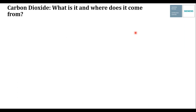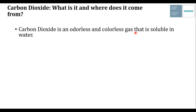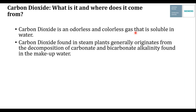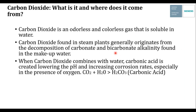Let's talk about carbon dioxide — what is it and where does it come from? Carbon dioxide is an odorless, colorless gas that is soluble in water. CO₂ found in steam plants generally originates from the decomposition of carbonate and bicarbonate alkalinity in the makeup water. When CO₂ combines with water, carbonic acid is created, lowering the pH and increasing corrosion rates — especially in the presence of oxygen. CO₂ and oxygen together can increase corrosion rates as high as 40 percent higher than with either gas alone.